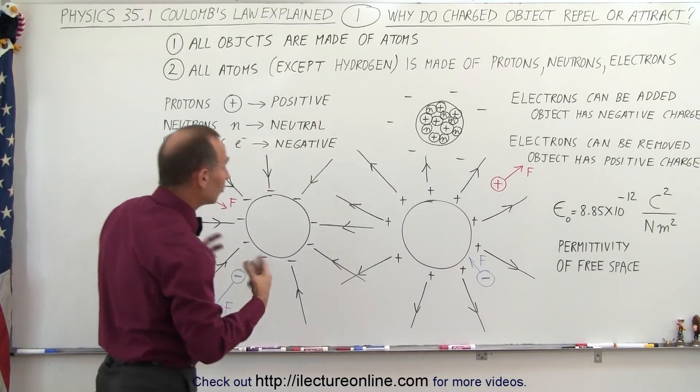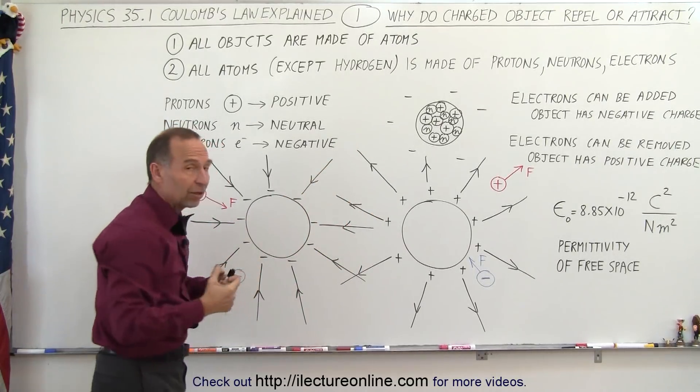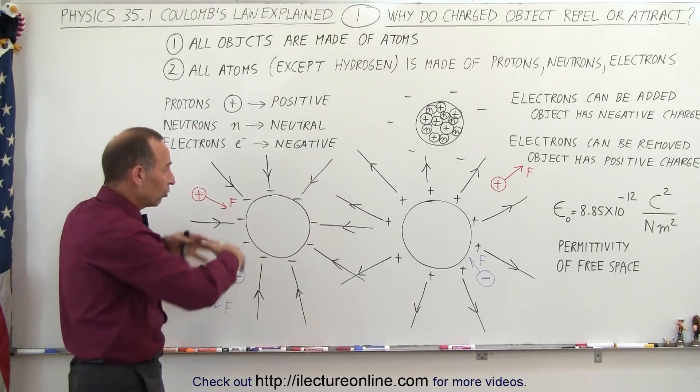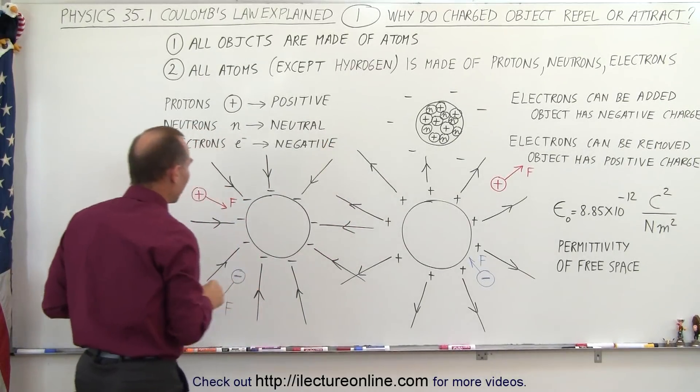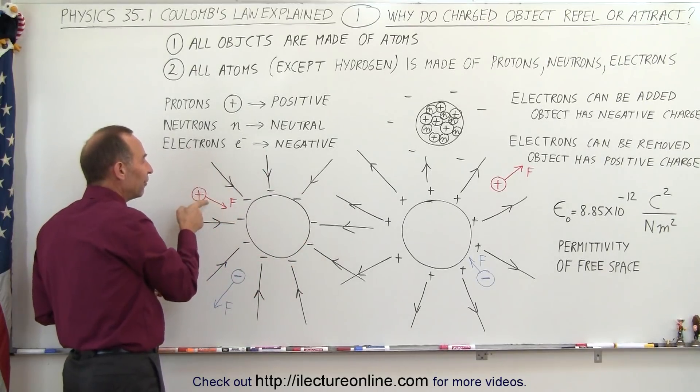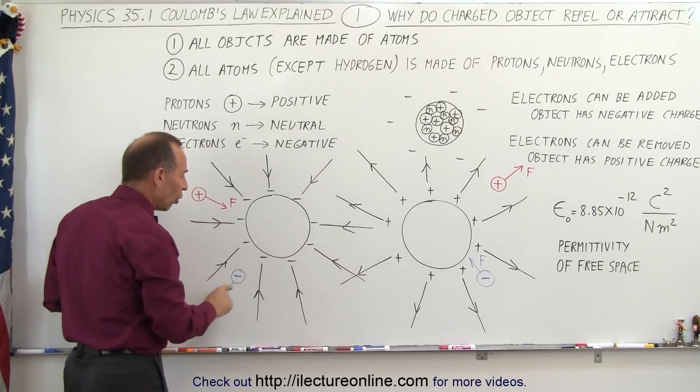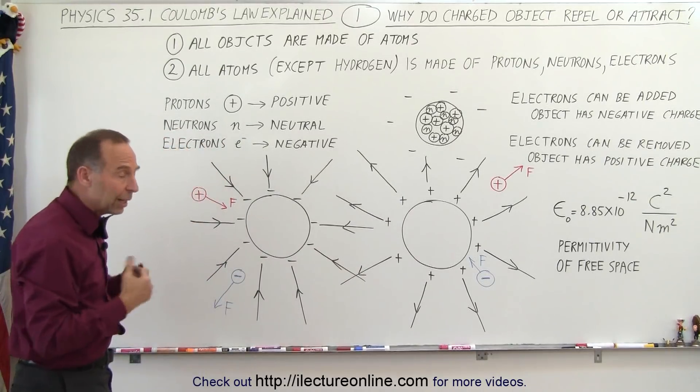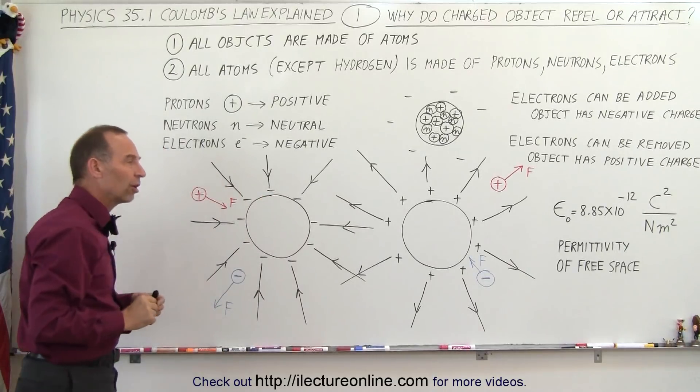With a negative charge object it's different. Here you can see that the arrows are drawn towards the object because it's negatively charged, so the sphere of influence has electric field lines pointing towards the object. And if you put a positive charge in that sphere of influence, it'll feel a force pulling it towards this object that's negatively charged. Or if it's a negative charge object, it will feel a force pushing it away from this other negatively charged object.